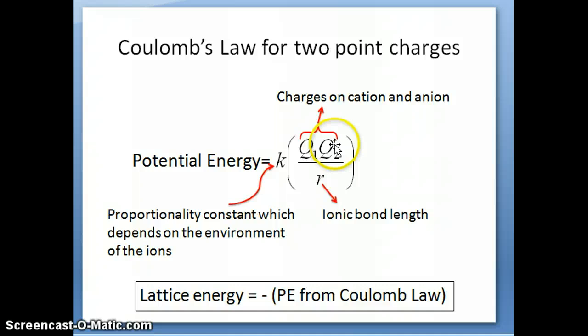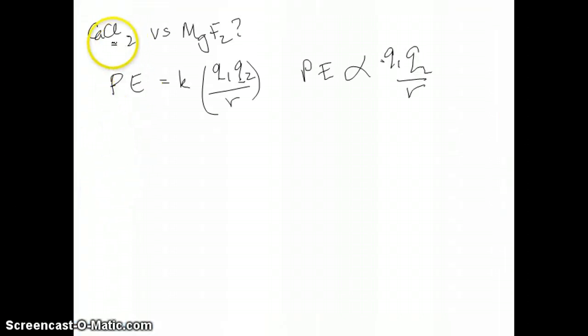Remember that the important equation to keep in mind here is Coulomb's equation so we're going to start with that in the scratch paper right here. So we're trying to compare these two ionic compounds. Remember Coulomb's equation, the potential energy between two interacting charges is going to be K constant times Q1, Q2 over R.